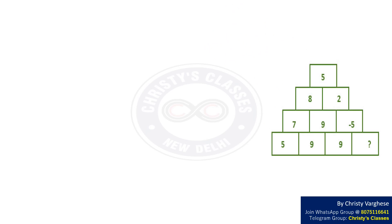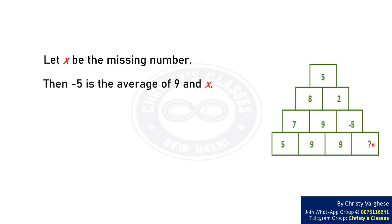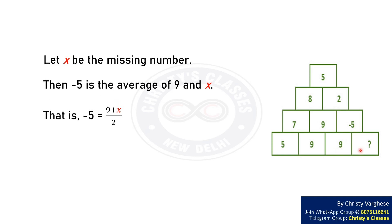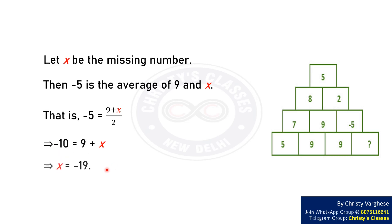Let x be the missing number. Then minus 5 is the average of 9 and x. That is, minus 5 equals 9 plus x divided by 2. On cross multiplying, we get 9 plus x equals minus 10, which implies x equals minus 19.